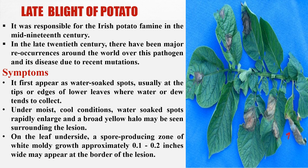Symptoms first appear as water-soaked spots, usually at the tips or edges of lower leaves where water or dew tends to collect. Under moist, cool conditions, water-soaked spots rapidly enlarge and a broad yellow halo may be seen surrounding the lesion. On the leaf underside, a spore-producing zone of white moldy growth approximately 0.1 to 0.2 inches wide may appear at the border of the lesion.